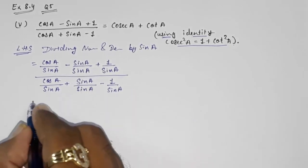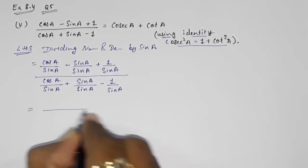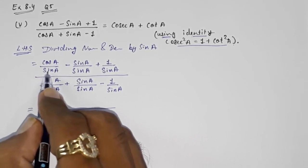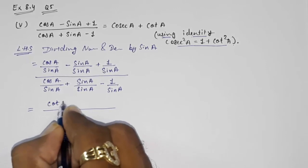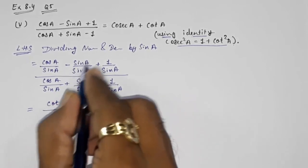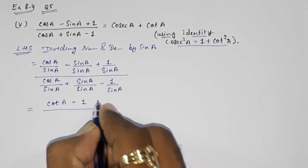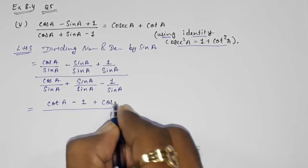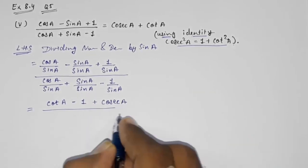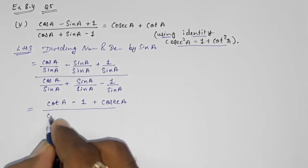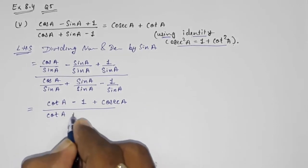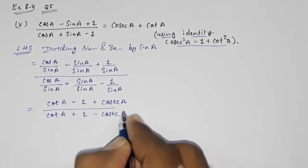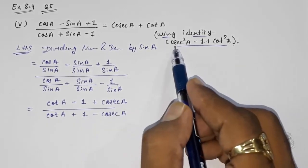Now you can convert this. How? cos A by sin A gives you cot A minus sin A by sin A cancels to minus 1, plus 1 by sin A will give you cosec A. In the denominator also: cot A plus 1 minus cosec A.